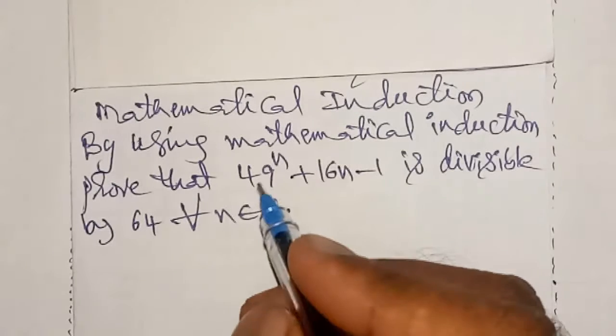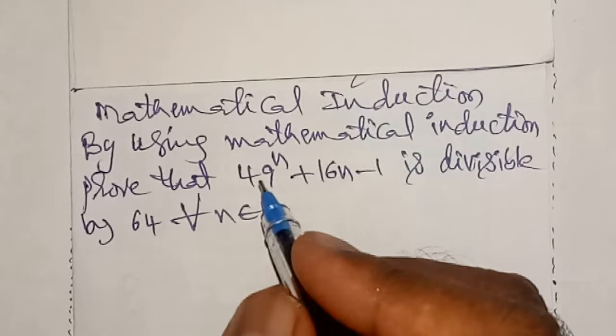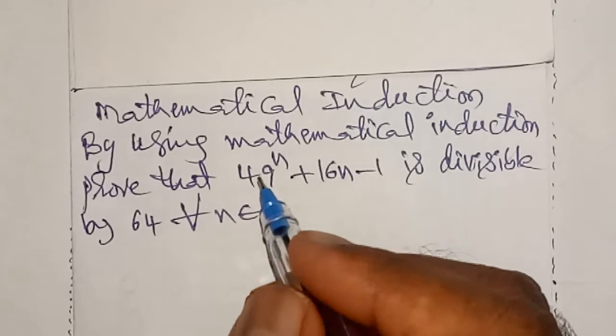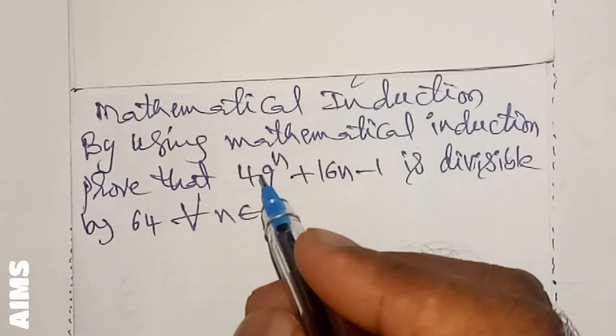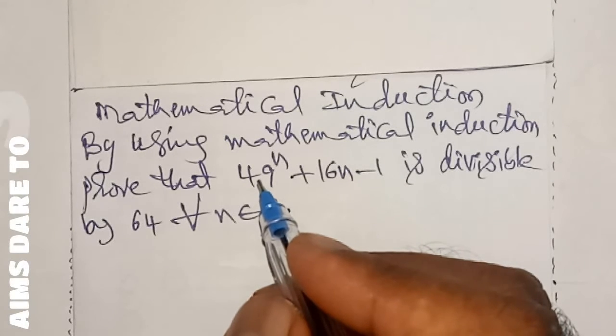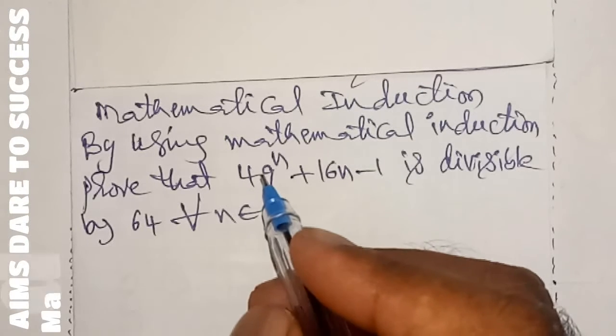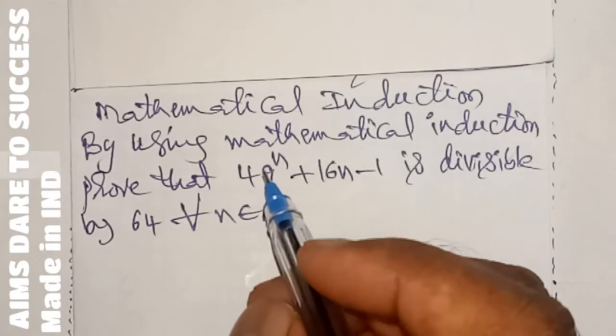Hi, hello, Namaste my dear friends and students. My name is Krishna Hariti, Founder of Apatikhariti Institute of Mathematics and Sciences, aims to lead to success, made in India. Today I came with a new tip and a new video.